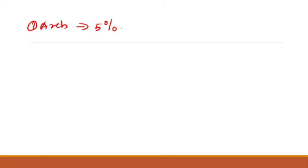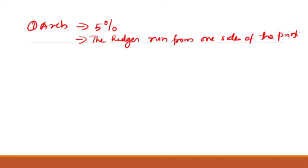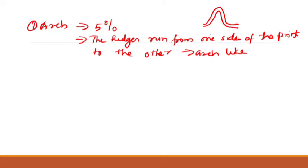In the arch pattern, the ridges run from one side of the print to the other in an arc-like fashion. There is no recurving of ridges in arch — unlike a loop, the ridges simply run from one side to the other side.